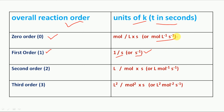Third, second order reaction — the unit is liter per mole per second, or liter mole inverse second inverse. Fourth, third order reaction — the unit is liter square per mole square per second, or liter squared mole to the power minus two second inverse.